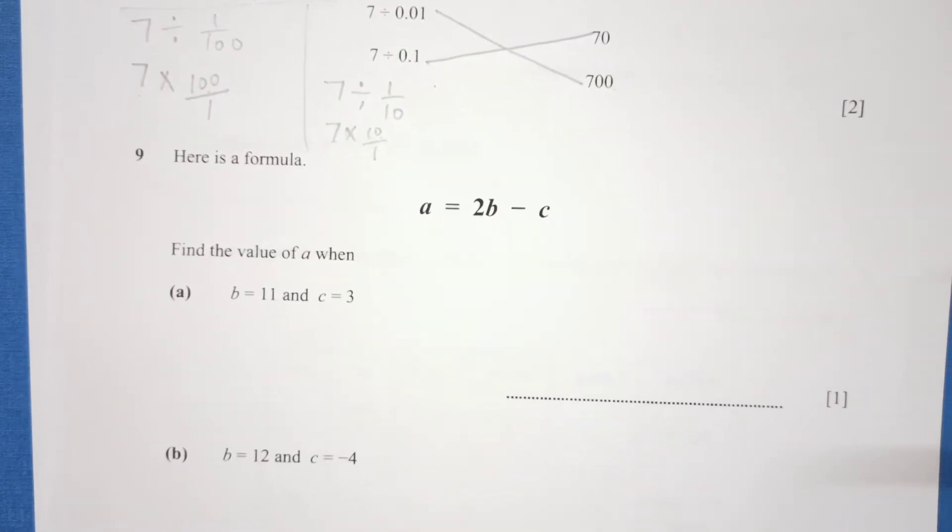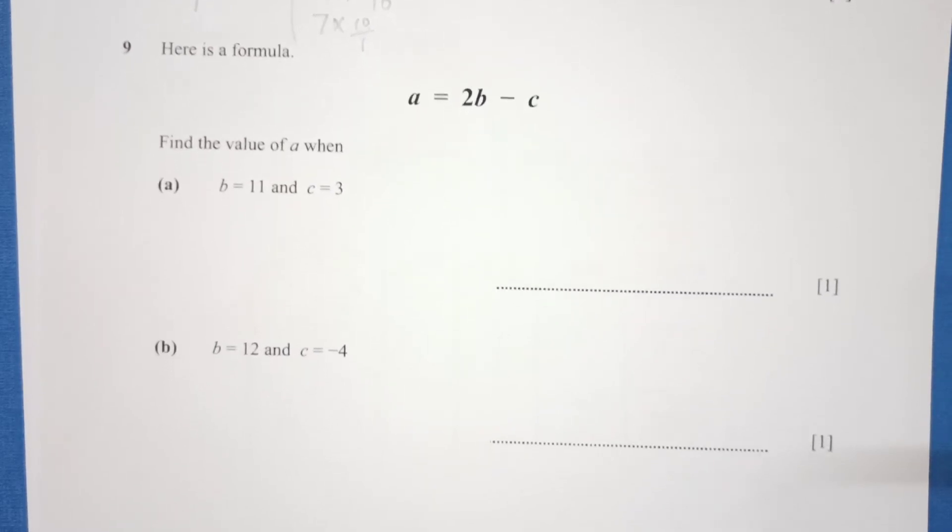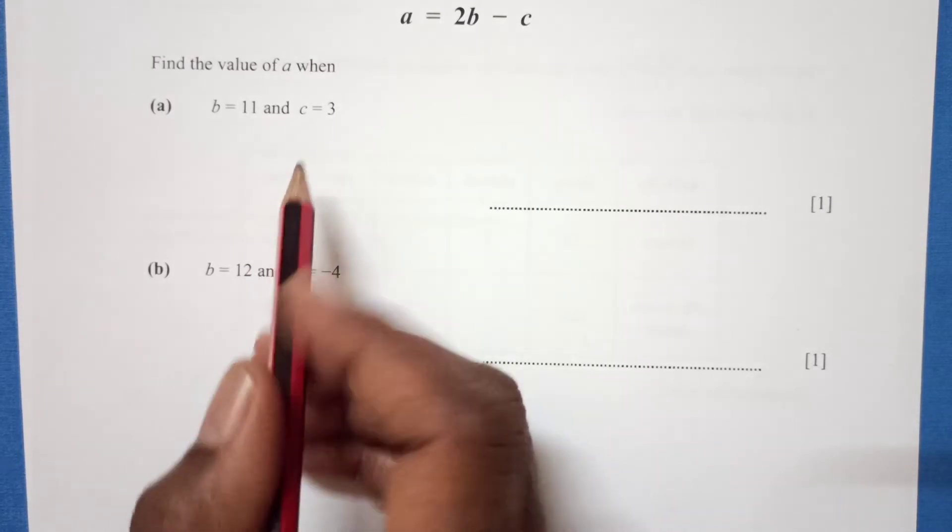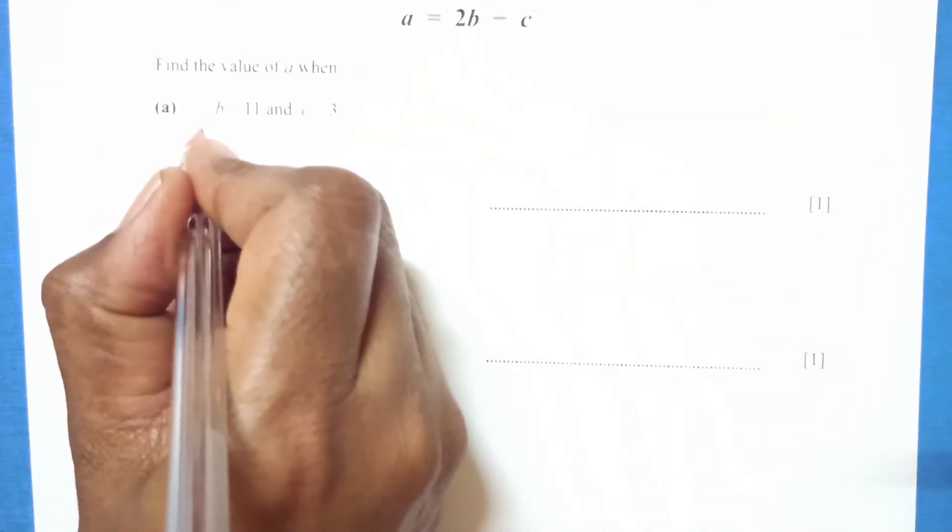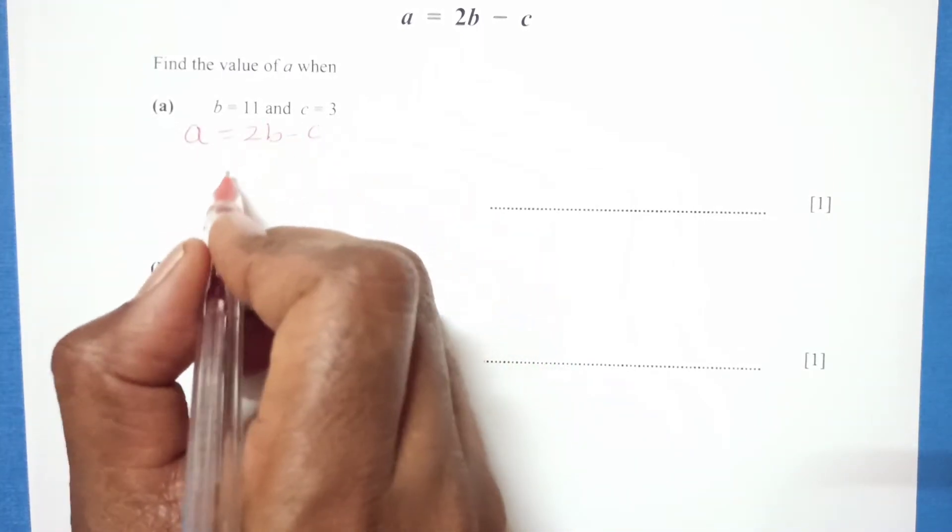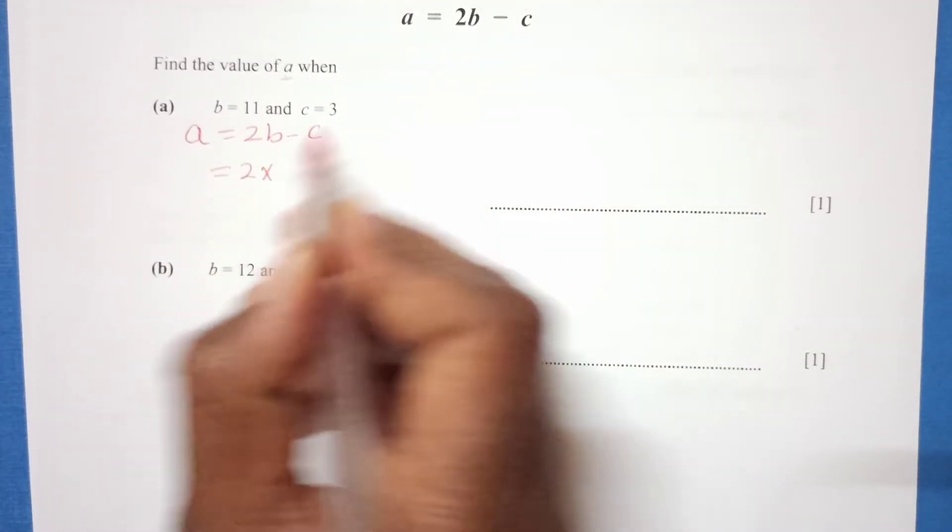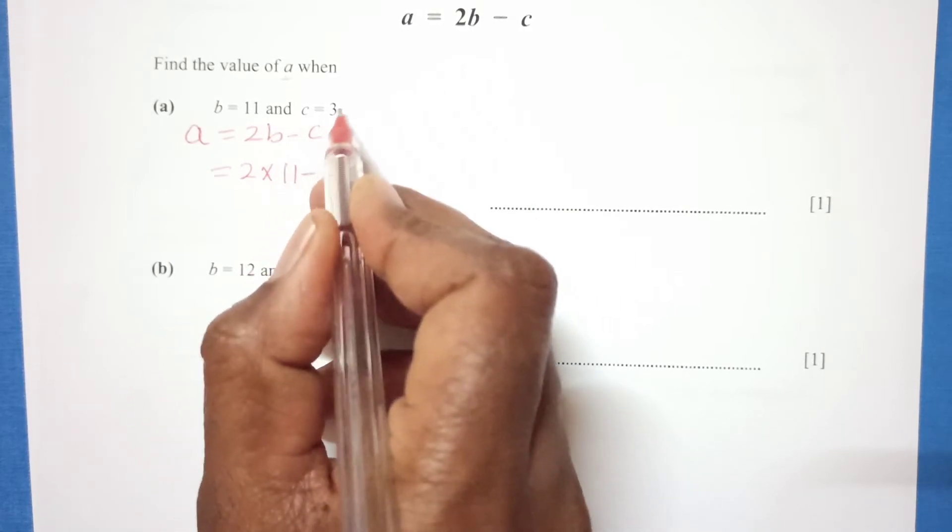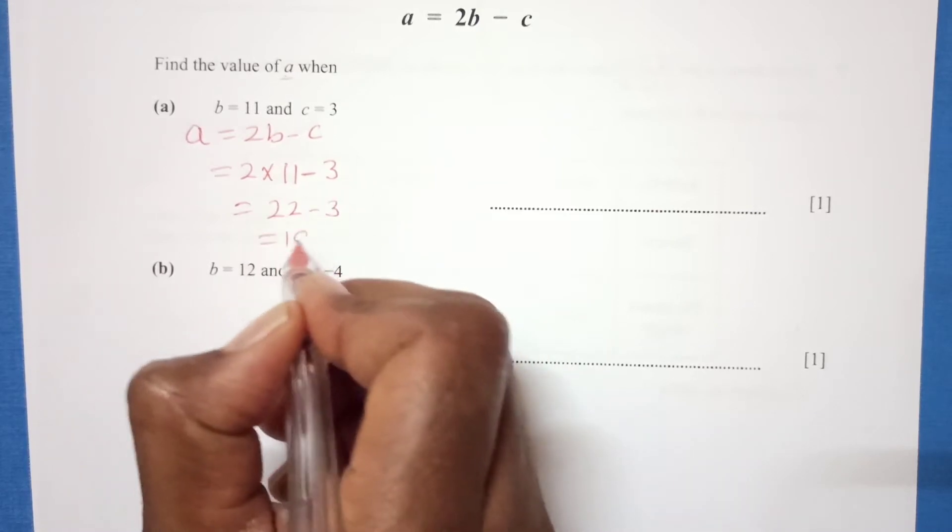Question number 9. Here is a formula: a equals 2b minus c. Find the value of a when b is 11 and c is 3. We need to just replace the values. So 2 times b, b is now 11, minus c, c is 3. So 22 minus 3, which is 19.